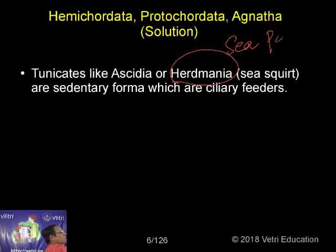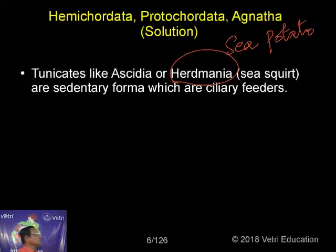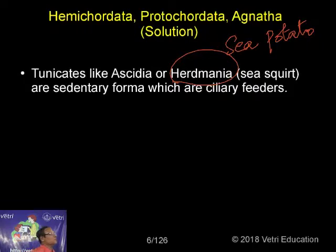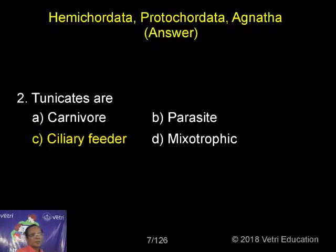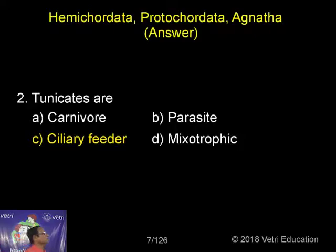They are commonly known as urochordates and are sedentary forms. Specifically in sedentary forms, we have a ciliary mode of feeding where they create a water current with the help of cilia, and the food carried in along with the water current is eaten.